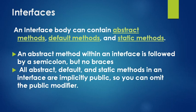In an interface, an interface body can contain abstract methods, default methods, and also static methods. An abstract method within an interface is followed by a semicolon but no curly braces. All abstract, default, and static methods in an interface are implicitly public, so you can omit the public modifier.